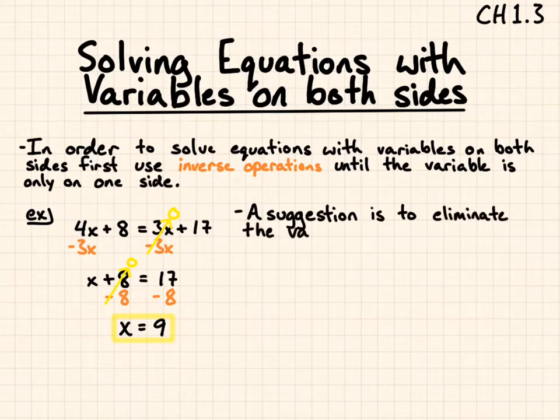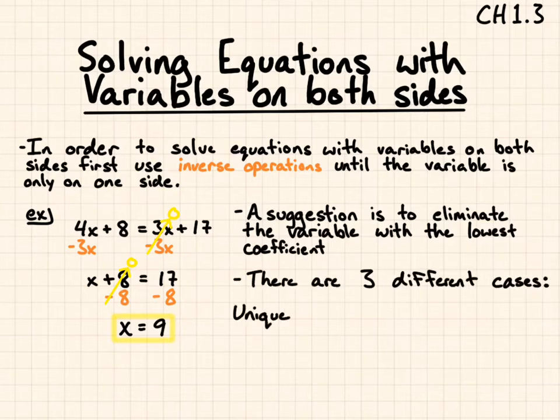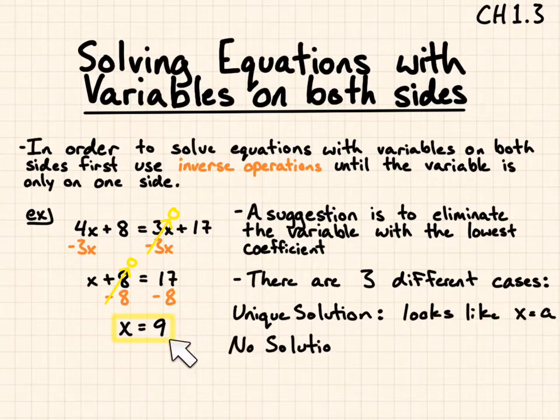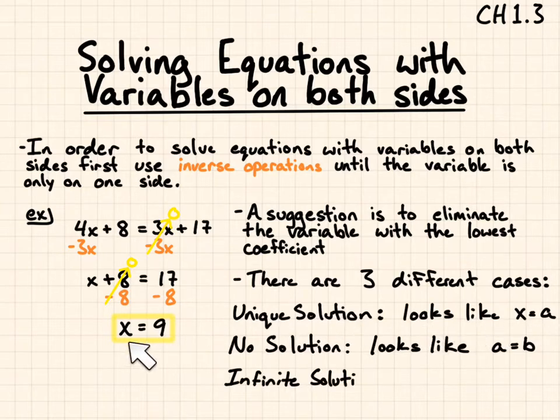So a suggestion is to eliminate the variable with the lowest coefficient. Now, there are 3 different cases, because there will not always be an answer. A unique solution, x equals a, is like what we had here for our first example. There might be a chance that all the variables go away, and because the variables are equal on both sides, and when I subtract, there's only numbers left. If you have something that looks like a equals b, so a number equals a different number, in that case, that's false, you could say, but the answer is no solution. If there's an infinite number of solutions, that looks like a equals a. And you can see that any value of x will work for it.